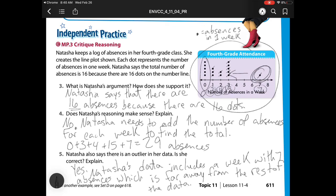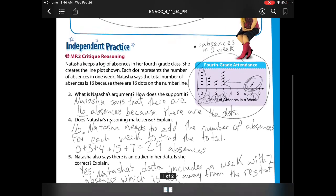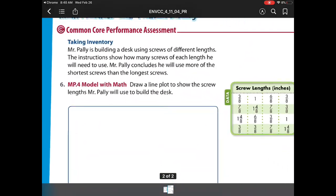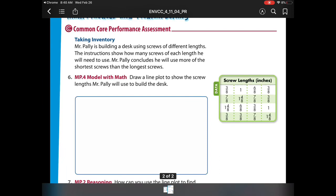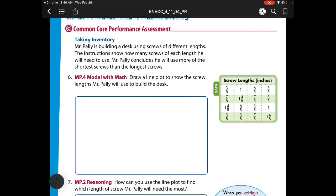All right, on to our next page. Question number 6, Mr. Polly is building a desk using screws of different lengths. The instructions show how many screws of each length he will use. Mr. Polly concludes he'll use more of the shortest screws than the longest screws. So our first part says draw a line plot to show the screw lengths that he will use to build a desk. So what I need to do is I need to figure out my smallest length and my biggest length.